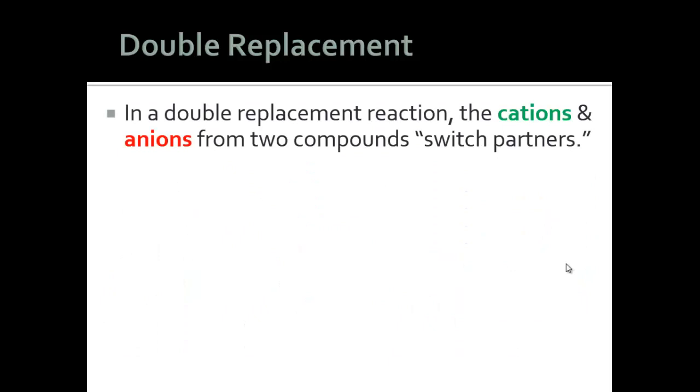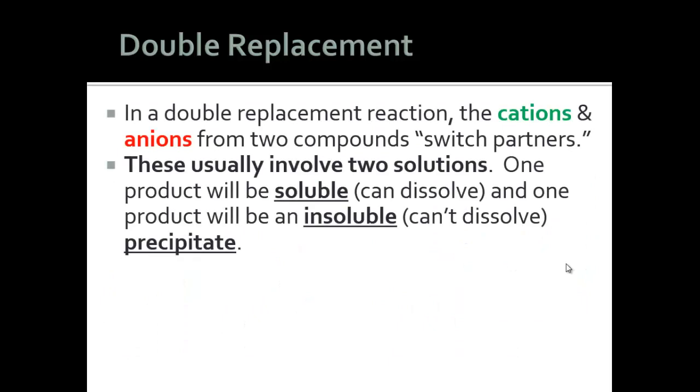In a double replacement reaction, you end up with two products. One of them will be soluble, meaning it can dissolve in water, and the other will be insoluble. We call that one a precipitate, an insoluble compound that forms and becomes visible, usually as a color change.